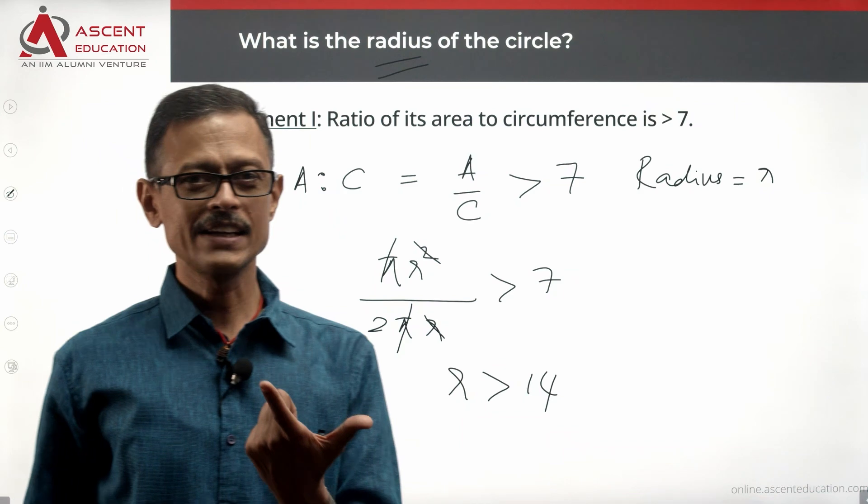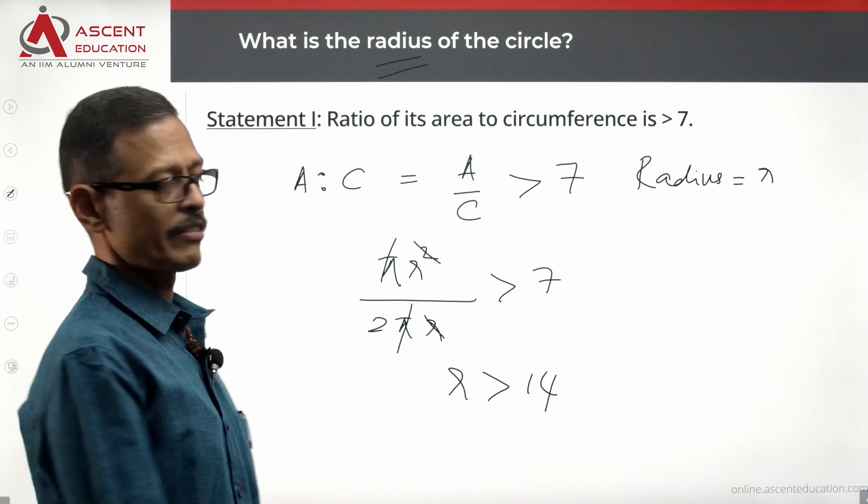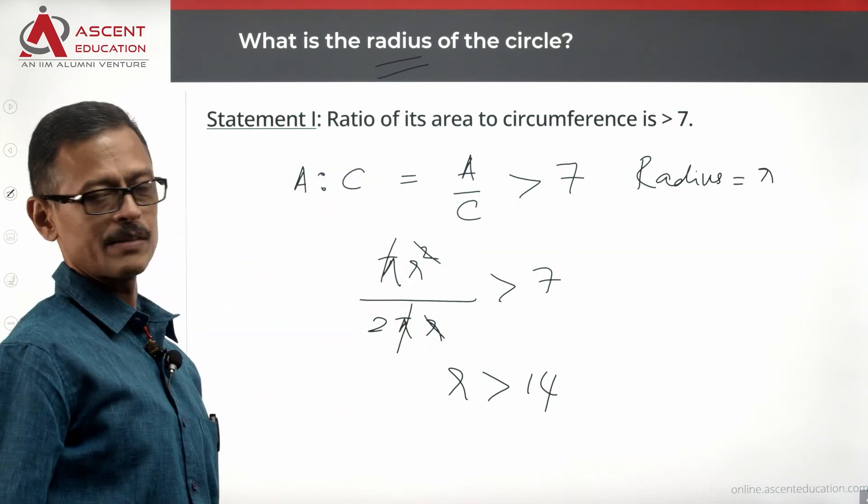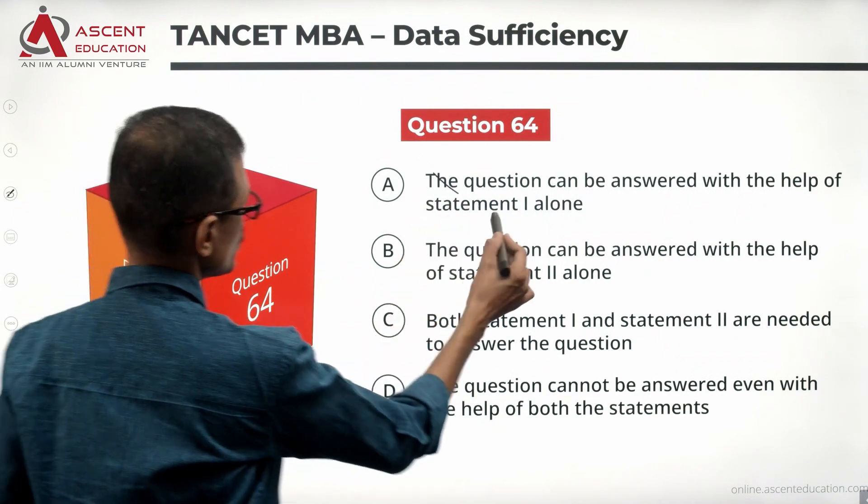R is greater than 14. It could be 14.1, it could be 140, it can be even 1 lakh. So we are finding infinite values using statement one. Statement one alone is not sufficient. We will rule out answer option A.